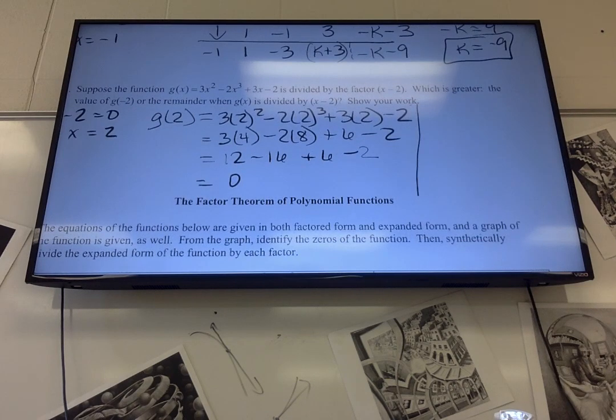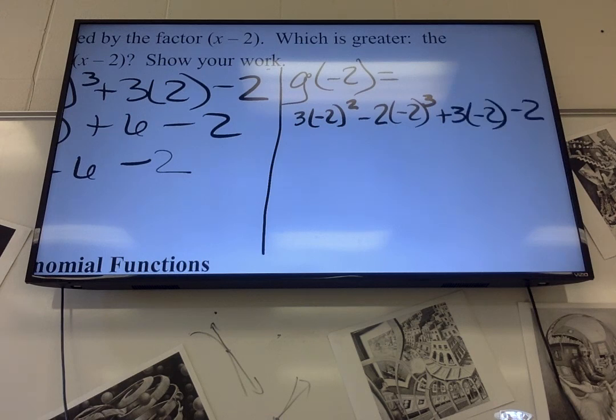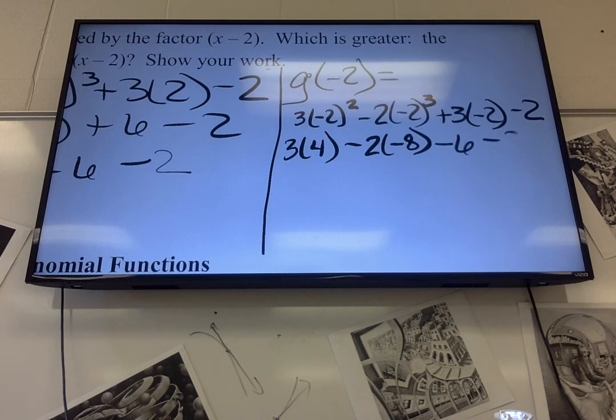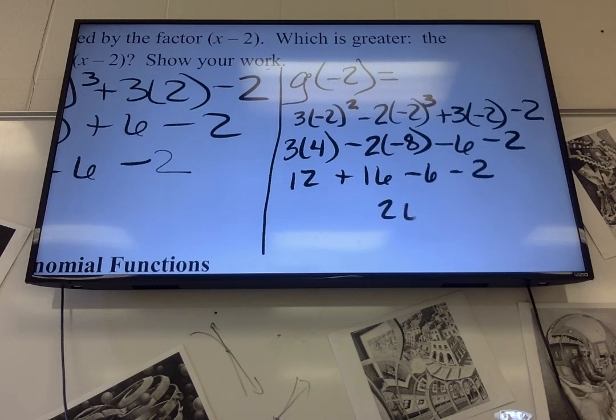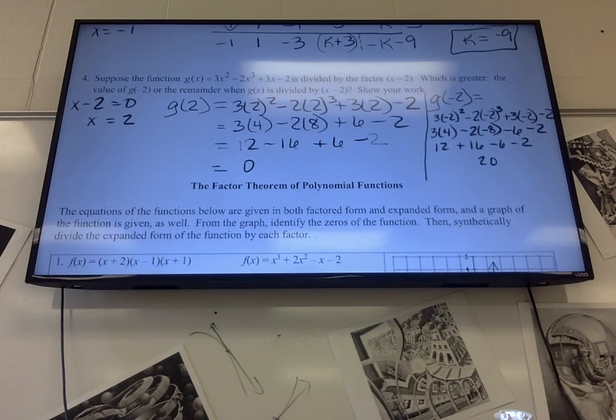So now for the next one, I want the remainder, or the value of g of negative 2. So I do the same thing, only this time I'm going to plug in negative 2. I have 3 times negative 2 squared, minus 2 times negative 2 cubed, plus 3 times negative 2 minus 2. So it's 3 times 4, and it's 2 times negative 8, minus 6 minus 2. 12 plus 16 minus 6 minus 2. 28 minus 6 is 22. 22 minus 2 is 20. So which is greater the value of g of negative 2? Yes, this one's greater.